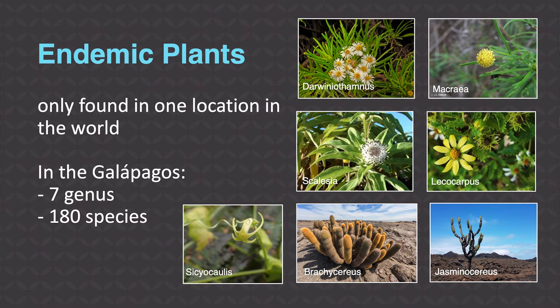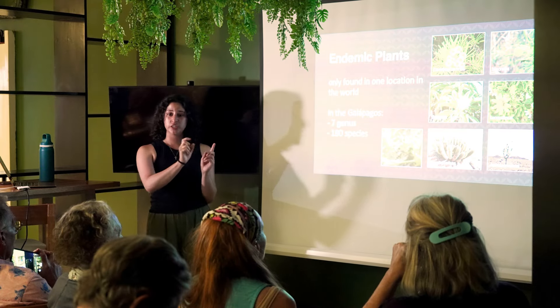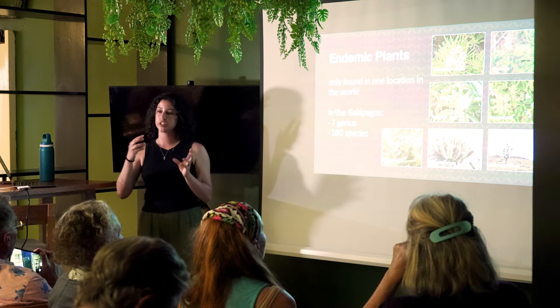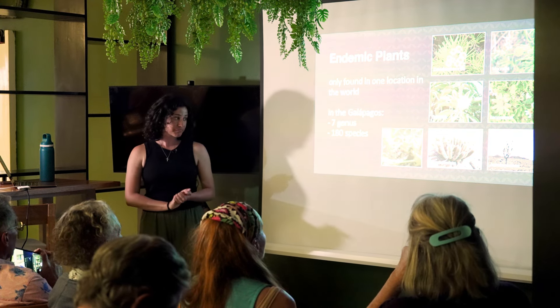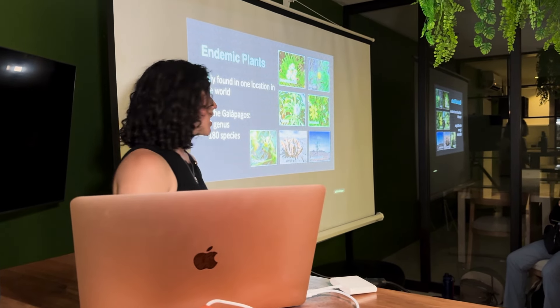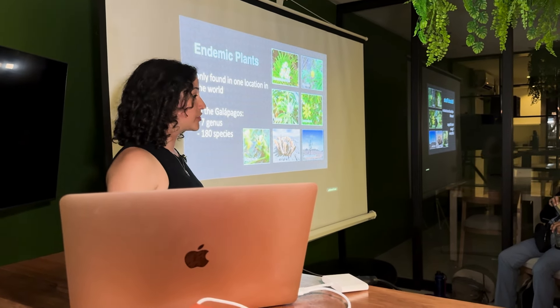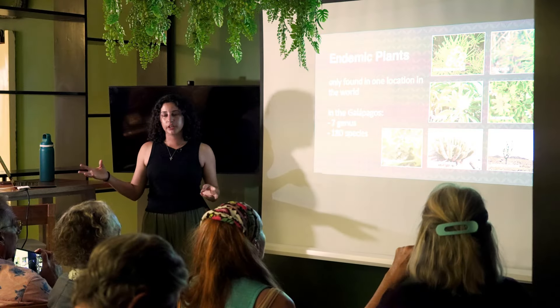What's really unique is that there are over seven endemic genera of plants. Genus encompasses more species than just species level. Four of those genera are in the aster family — Asteraceae, the sunflower kind. Two are in the cactus kind: Brachycereus and Jasminocereus, the candelabra cactus. And one is in the pumpkin gourd kind.